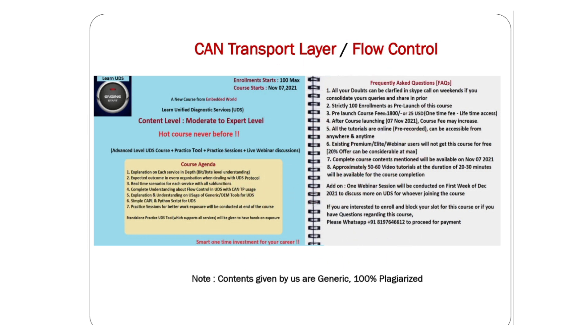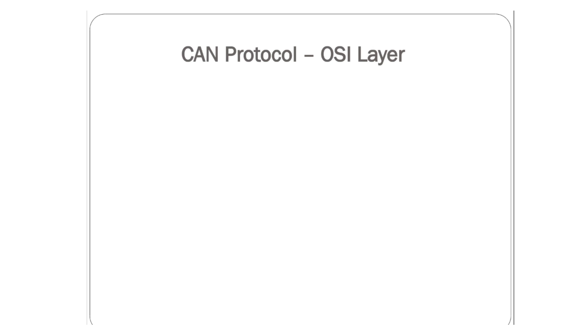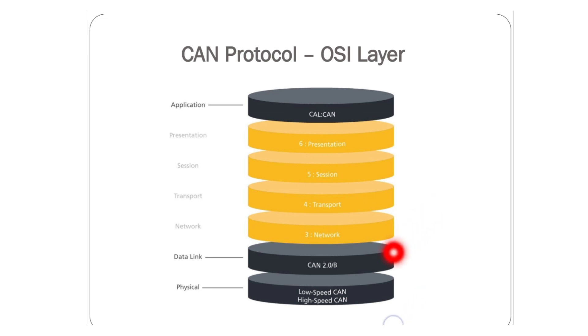Before entering into CANTP, let's understand the CAN protocol in the OSI layer. In all communications, protocols occupy their own place. Similarly, CAN protocol occupies the physical layer, data link layer, and application layer. In the physical layer there is CAN low speed and high speed. In the data link layer it is CAN 2.0.